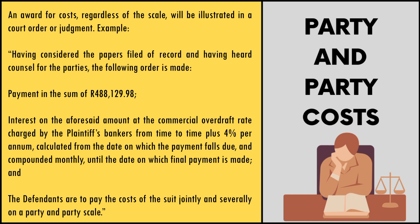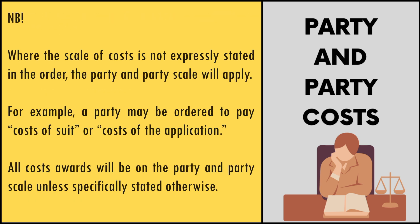Having considered the papers filed of record and having heard counsel for the parties, the following order is made: payment in the sum of R488,129.98; interest on the aforesaid amount at the commercial overdraft rate charged by the plaintiff's bankers from time to time plus 4% per annum, calculated from the date on which payment falls due and compounded monthly until the date of final payment; and the defendants are to pay the costs of the suit jointly and severally on a party and party scale. Where the scale of costs is not expressly stated in the order, the party and party scale will apply.